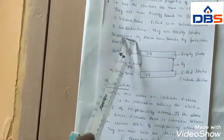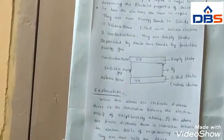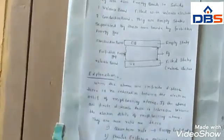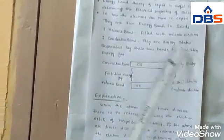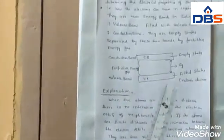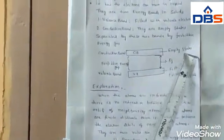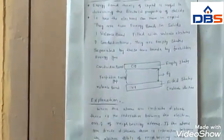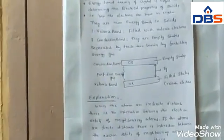The other band is the conduction band. The conduction band initially has empty states. These two are the two energy bands of the solids. These two bands are separated by a forbidden energy gap. Pictorially, the valence band is filled with filled states — that is, the valence electrons — and the conduction band has empty states. These two bands are separated by the forbidden energy gap.